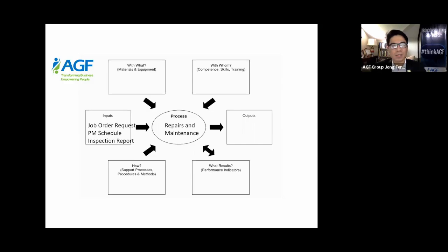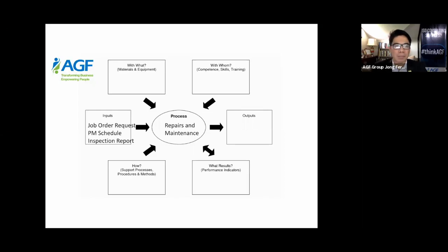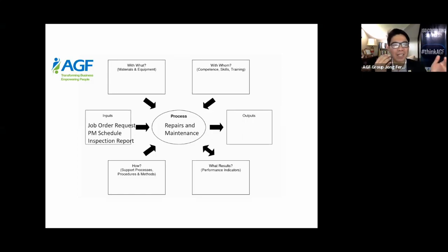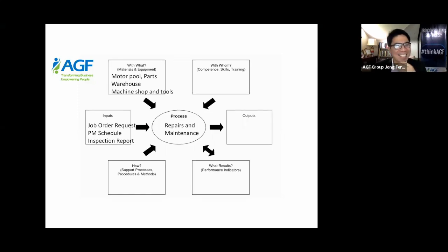Now that we have identified the inputs, let's go to outputs — what should be the end result of this procedure? For a quality management system, the output must be a quality output. But first let me discuss the front right leg of the turtle — materials and equipment — before we get to the output.